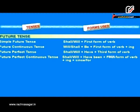Future tense — simple future tense: shall/will plus first form of verb. Future continuous tense: will/shall plus be plus first form of verb plus -ing.